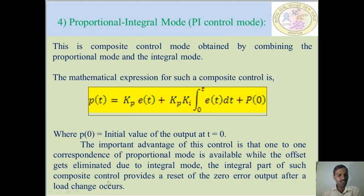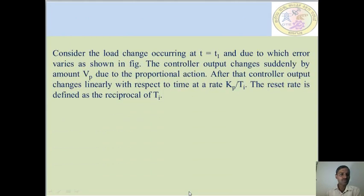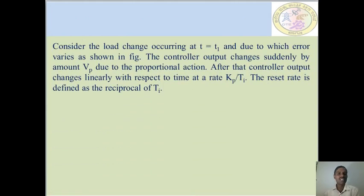The integral part of this composite control provides a reset of the zero error output after a load change occurs. Consider a load change occurring at t = t1, due to which the error varies as shown in the figure. The controller output changes suddenly by amount Vp due to the proportional action.